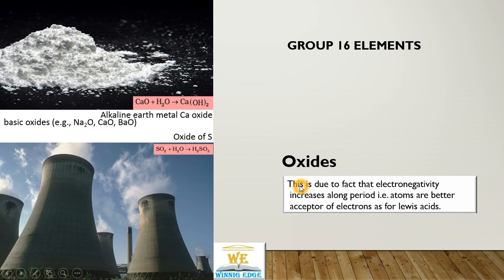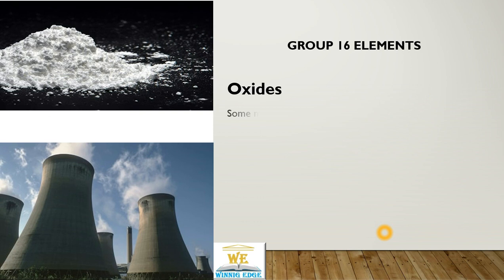The reason for this is that electronegativity increases along the period. So they are better acceptors of electrons, or Lewis acids, as we move along the period.